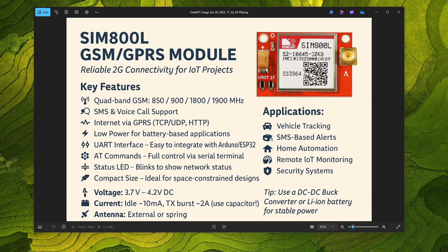The SIM800L is very small and will fit nicely in your PCB or device. For power supply, it needs 3.7V to 4.2V DC according to the datasheet, but I have tested it at 5V and some of my projects run at 5V without problems. We need to add a capacitor, and the power supply should be at least 2 amperes output, because sometimes when transmitting data the SIM800L can use up to 2 amperes, so if your power supply cannot deliver that it may cause problems.